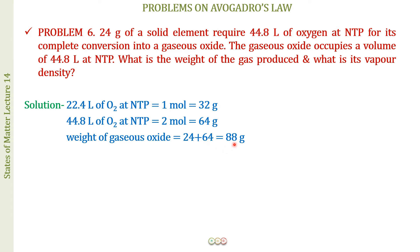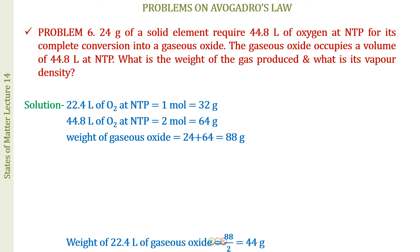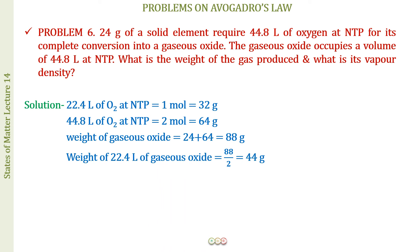This 88 g of the gaseous oxide occupies 44.8 liters at NTP. What is the mass at 22.4 liters? It is going to be divided by two. So the weight of 22.4 liters of the gaseous oxide = 88/2 = 44 g.